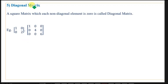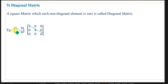The next definition is a diagonal matrix. The diagonal elements are the first element in the first row, second element in the second row, third in the third row, and so on. A diagonal matrix is one in which all non-diagonal elements are zero — only the diagonal elements may be non-zero. If you see the examples, the diagonal elements are present and all non-diagonal elements are zero. Such a matrix is called a diagonal matrix.